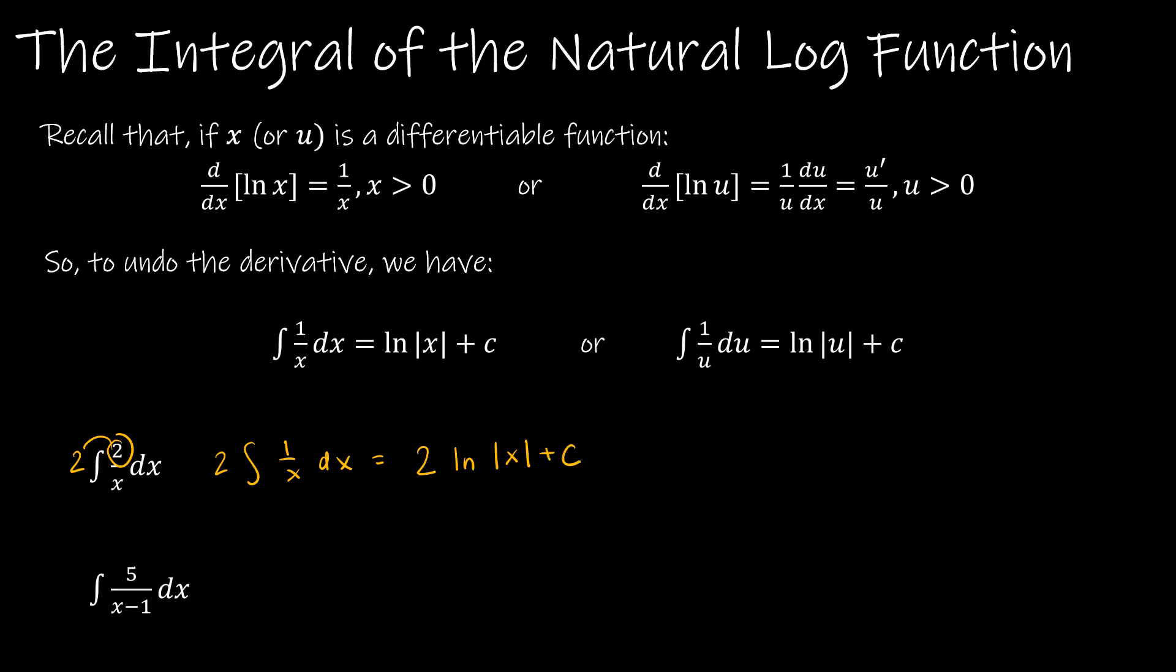For the second one, same idea. I have x minus 1 in the denominator, so I can think about taking 5 to the outside. This is 1 over x minus 1 dx. The derivative of x minus 1 is 1, so we don't have to worry about the chain rule in this example. This is just 5 times the natural log of the absolute value of x minus 1 plus c.